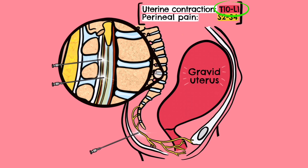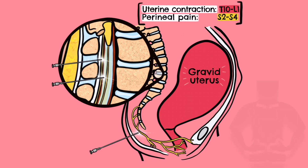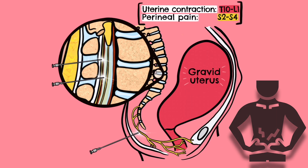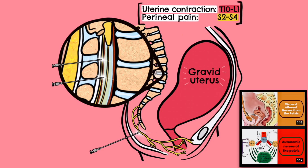Pain is therefore referred to the T10 to L1 dermatomes, such that it is normally felt in the lower abdomen, sacrum and back. This pain is often dull and poorly localised in nature, and may present with a pressure or aching sensation. Some visceral pain can also travel with parasympathetic afferent nerves, accounting for referred pain to the S2 to S4 nerve roots, though it is not purely somatic. This is covered in more detail in one of our other videos exploring visceral afferent nerves from the pelvis.